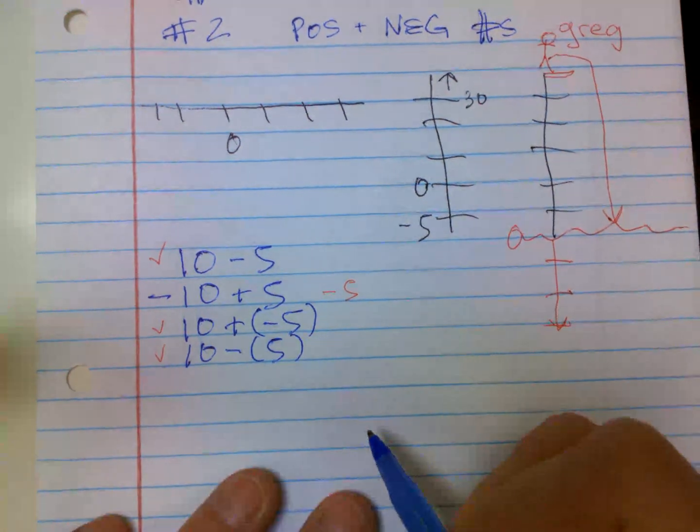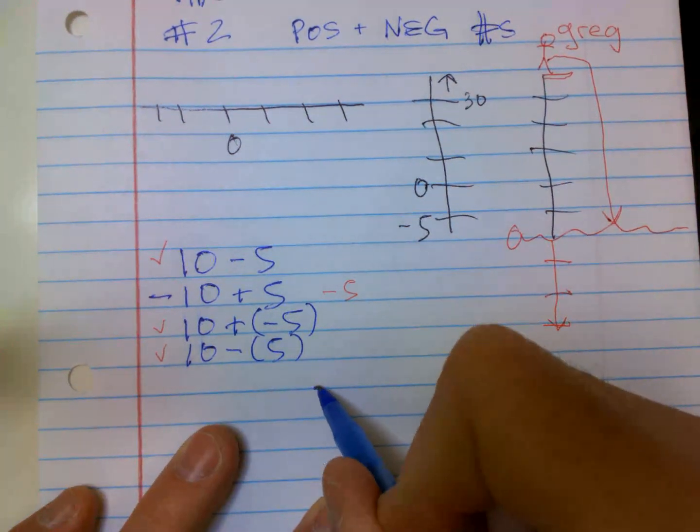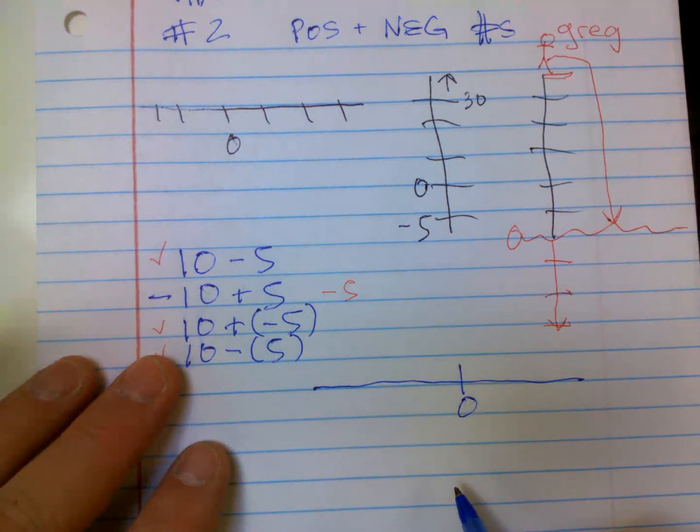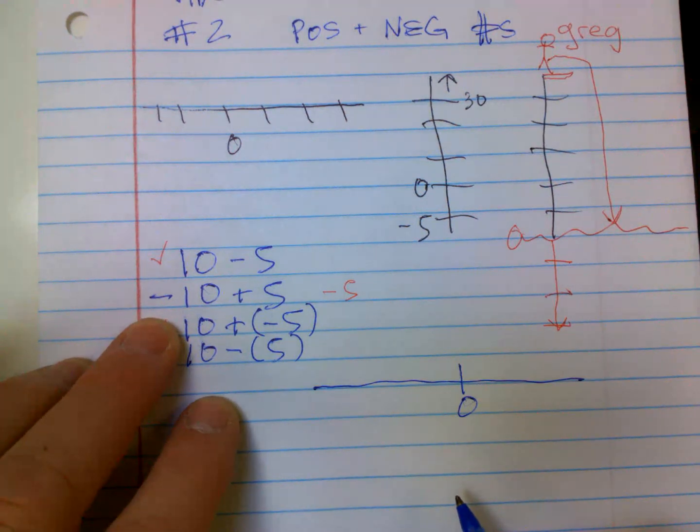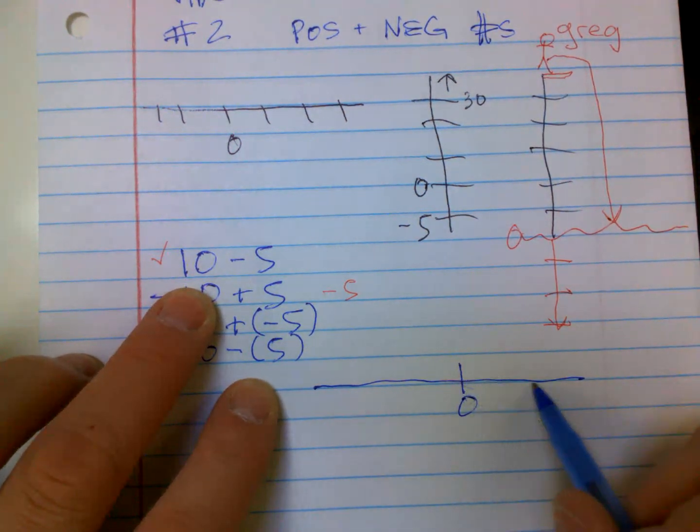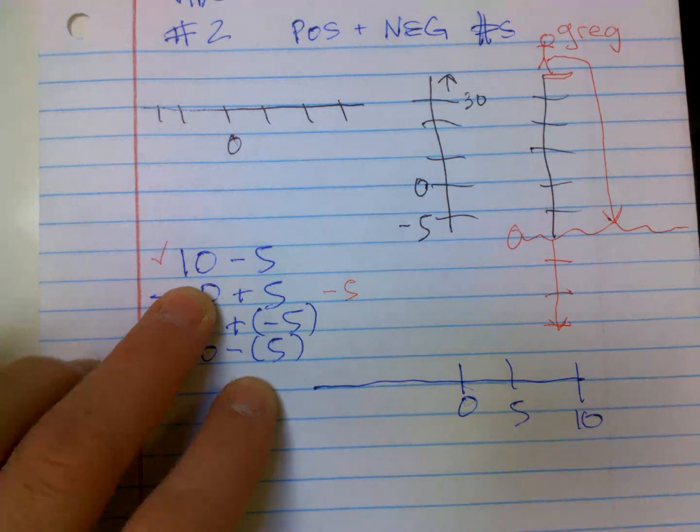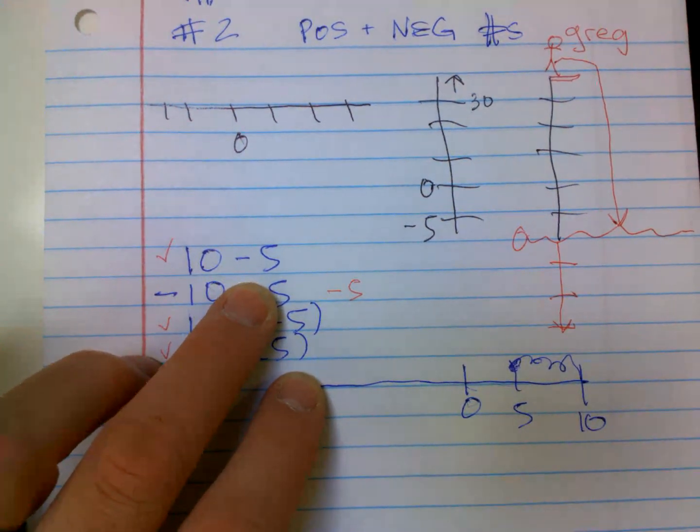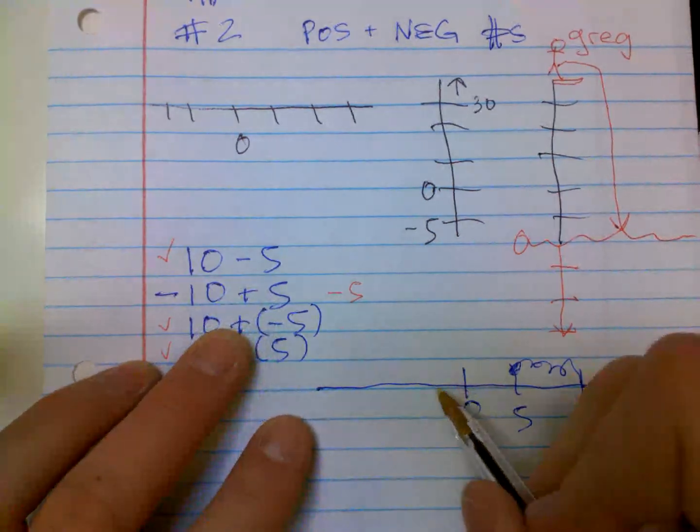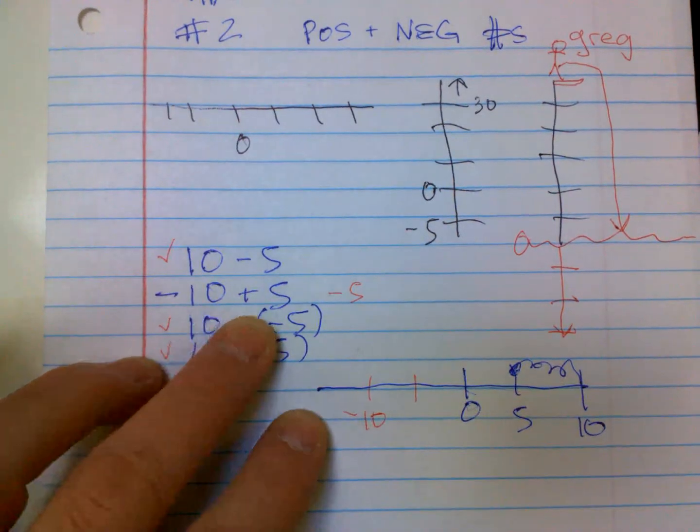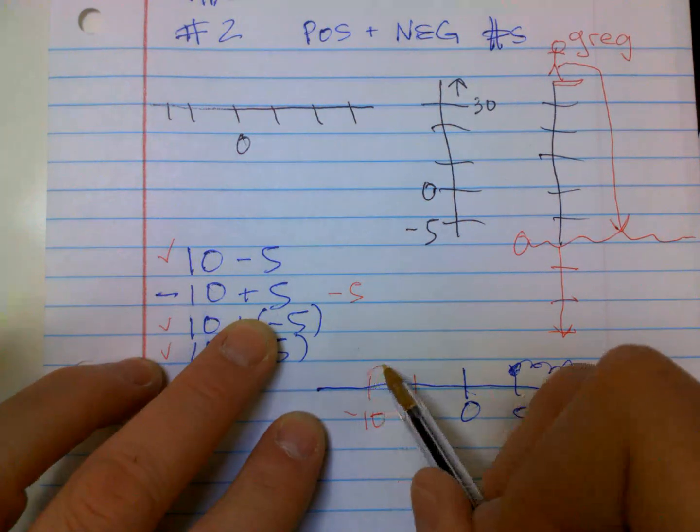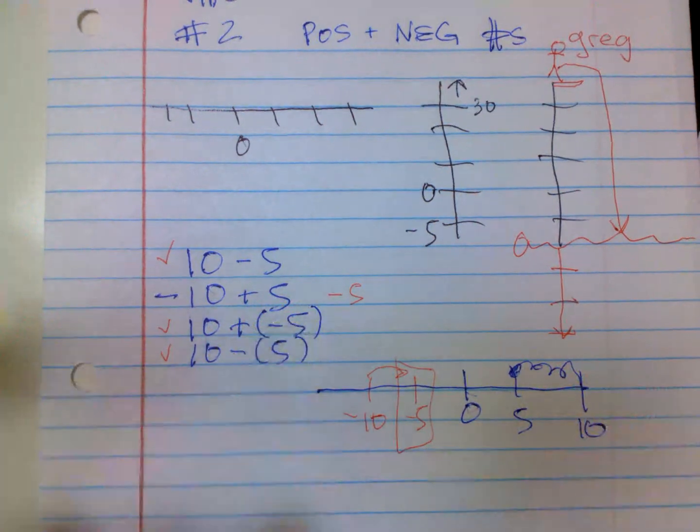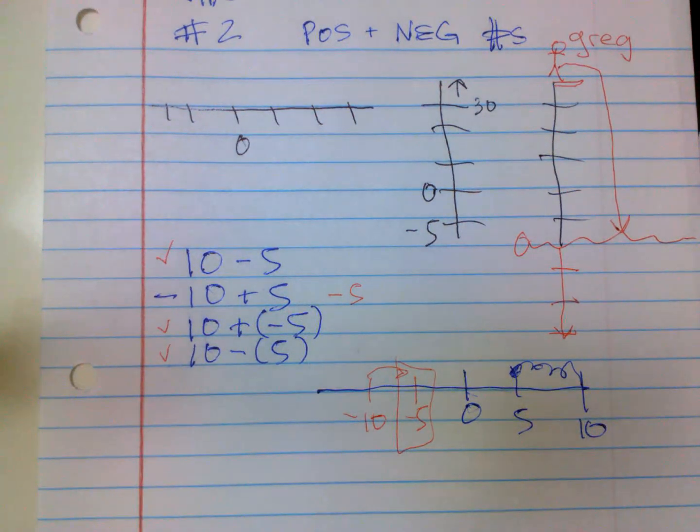Or the other thing you can do if you're ever confused is just throw a number line down there, okay? You start with the first number, okay? So let's look at the first one is 10. So you go all the way over to 10, okay? And then you're going to take away 5. 1, 2, 3, 4, 5. You're going to end up here, okay? The second one, you're starting at negative 10, okay? But then you're going to add 5. Oh, it's going to go this way, okay? So then you're going to be stuck at negative 5. You still owe $5. Mom, Dad, okay?